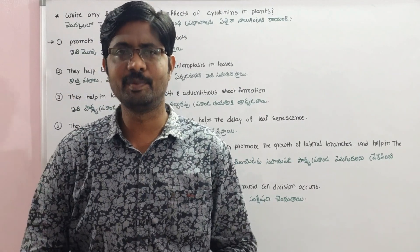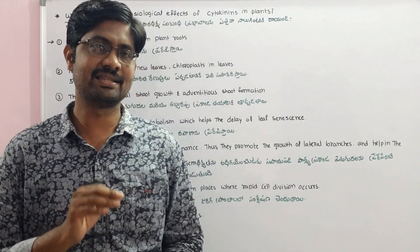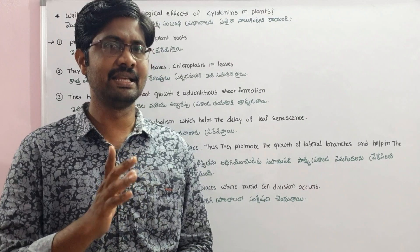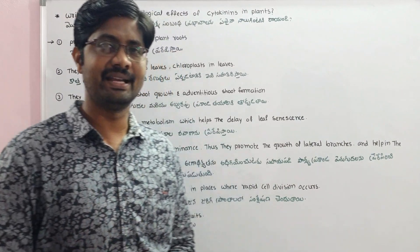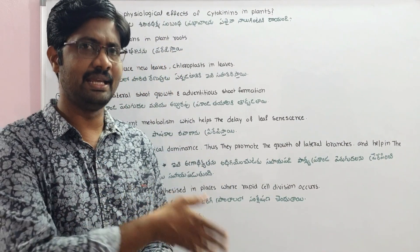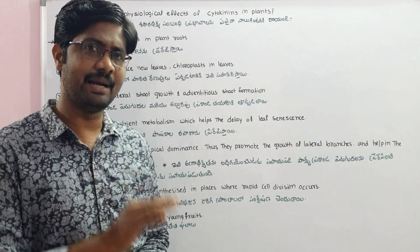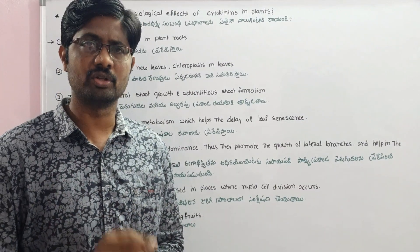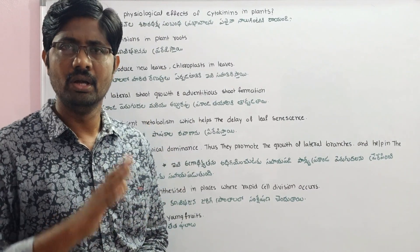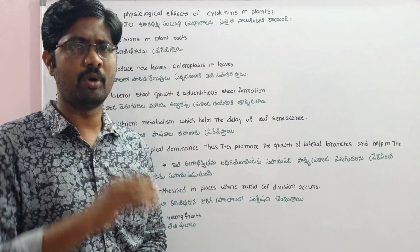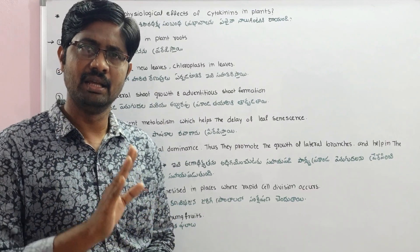Hi students, welcome to Basker's Biology. In this video we are going to discuss the 6th chapter: Plant Growth and Development. The topic is plant growth hormones, also called plant growth regulators or phytohormones. This topic carries 4 marks and there is a high chance it appears in the exam.